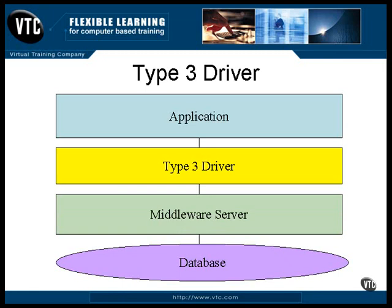A type 3 driver talks to a middleware process, usually running on another machine. The communication between the processes uses a database-independent protocol, and the middleware component uses the native API of the database. Since the middleware component is its own stand-alone program and it's on the same computer as the database, it could actually be using a type 1 or type 2 driver to talk to the actual database.